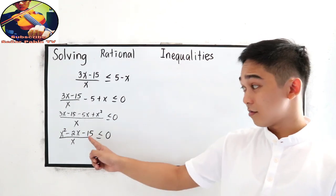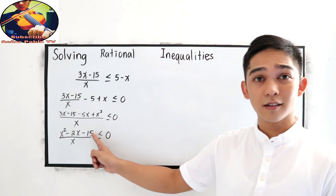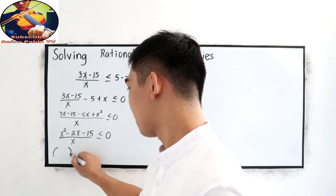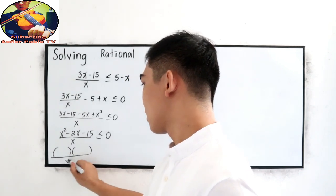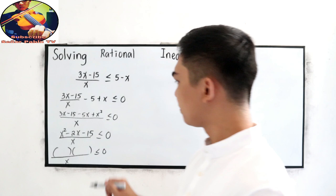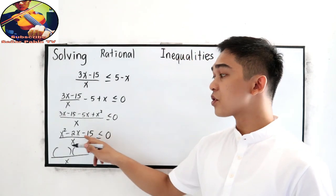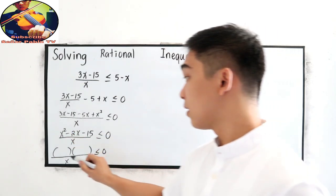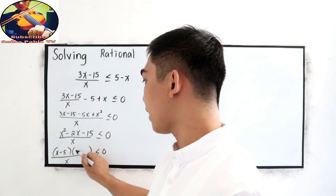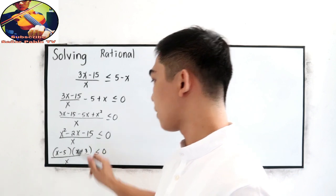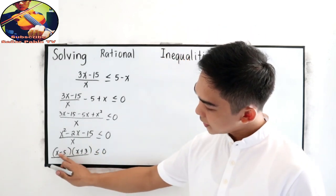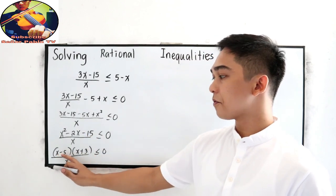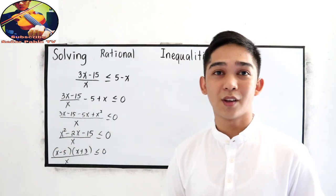Since the numerator is quadratic, find its factors. We need factors of negative 15 whose sum is negative 2. Those are x minus 5 and x plus 3. Let us check: negative 5 times positive 3 equals negative 15, and negative 5 plus 3 equals negative 2. Correct.